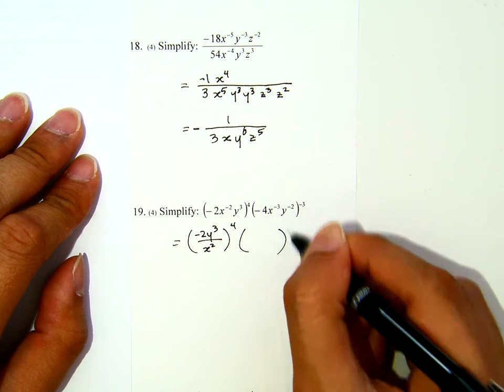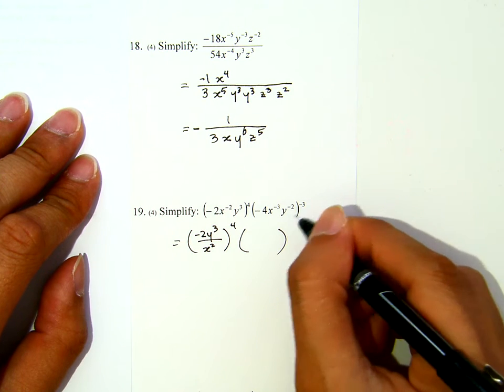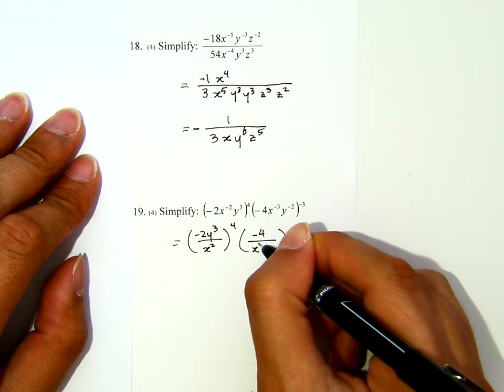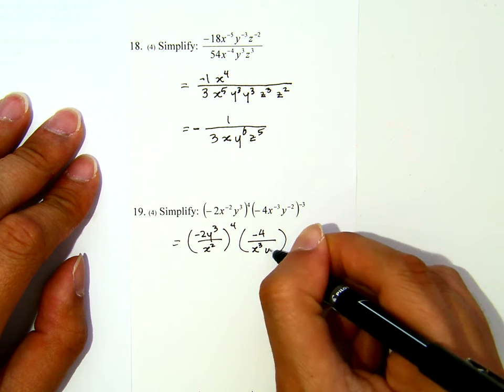For the second group there, I have negative exponent here and here, so negative 4 stay on the top. Y to the negative 3, now I drop it down to the denominator, likewise for the y.